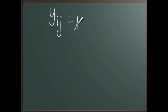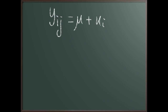Individual i, observation j is modeled as an overall mean mu, plus the individual effect — let's call it u_i — so for each i we have a different value, and we have a residual term e_ij for each observation. This is a very simple one-way ANOVA model.